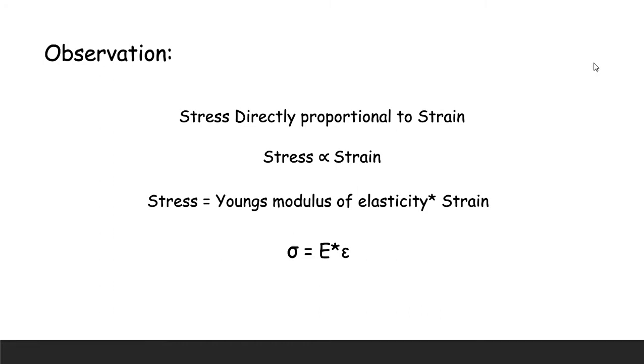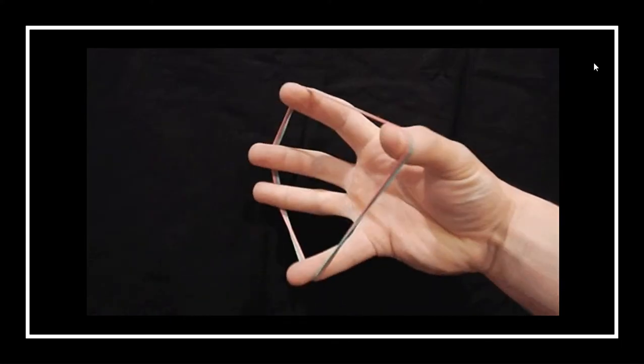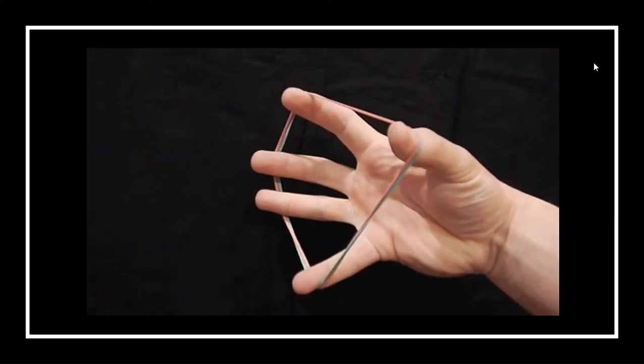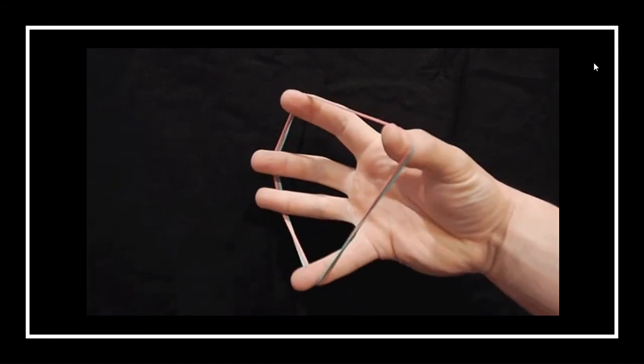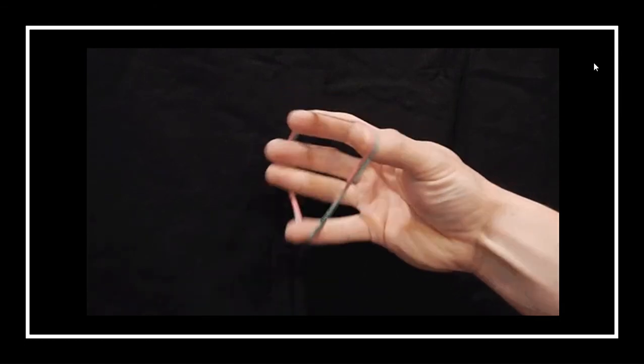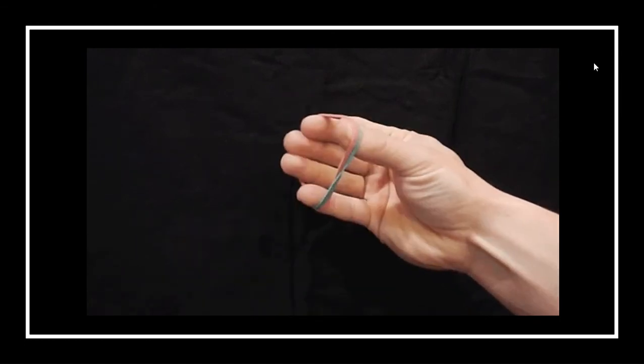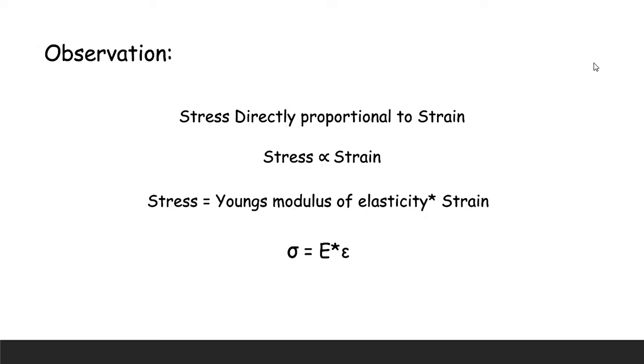Observatively, upon seeing the animations, we can say that the stress is directly proportional towards the strain. Upon the human keeping stress on the rubber bands, they are undergoing strain proportionally. The stress is directly proportional to the strain.